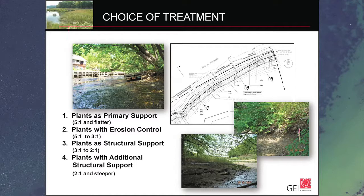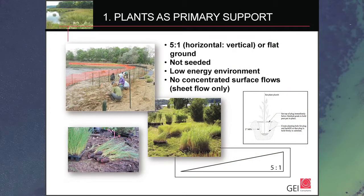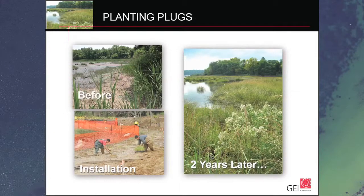We're going to look at four different options: plants as primary support, plants with erosion control, plants as structural support, and plants with additional structural support. The slope gradient gives you a hint as to what might be needed. Plants as primary support — this is one of my early projects at Bar Beach, a protected tidal cove with a very flat slope, not in a headland situation. In a low energy wave environment, vegetation alone can work on stabilizing the slope; you don't always need structure.